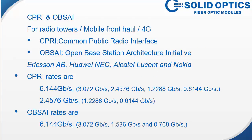The last protocol I'd like to address is CPRI or OBSAI. This is more for radio towers and mobile fronthaul, 4G networks. CPRI is for radio interfaces — Common Public Radio Interface — and OBSAI is Open Base Station Architecture Initiative. Ericsson, Huawei, Alcatel, and Nokia are really working on these standards, which are for 4G networks. CPRI rates are 6 Gig and then scale down, with 2.5 Gig and lower. OBSAI is also 6 Gig and scales down to other speeds as well.